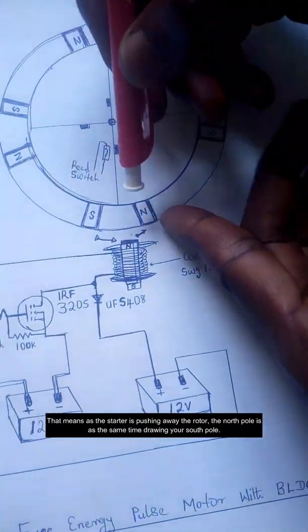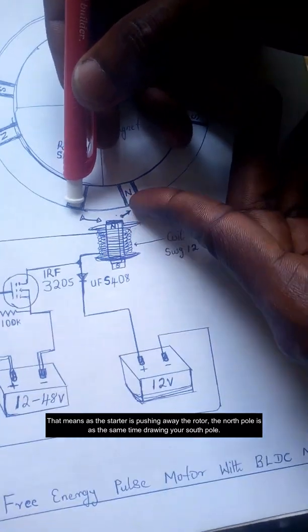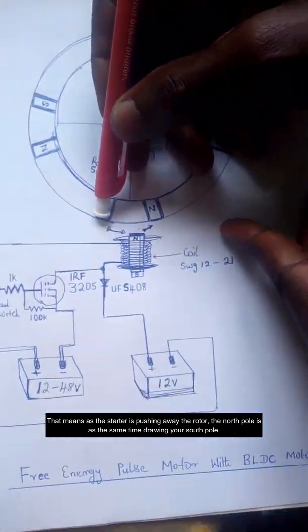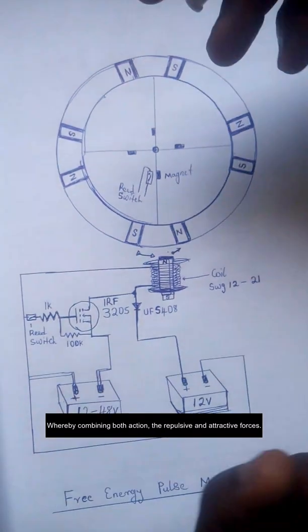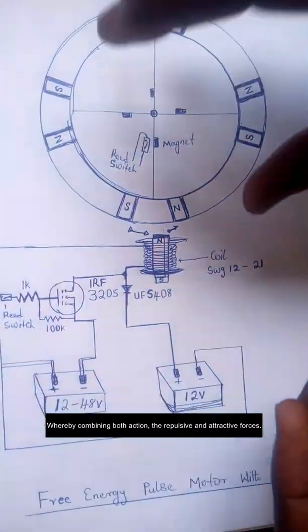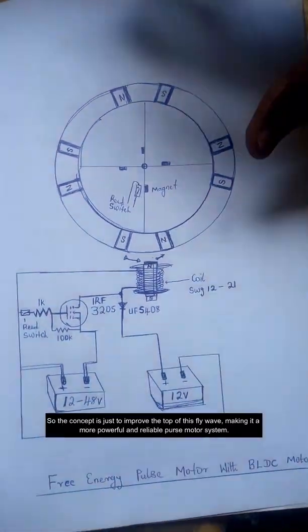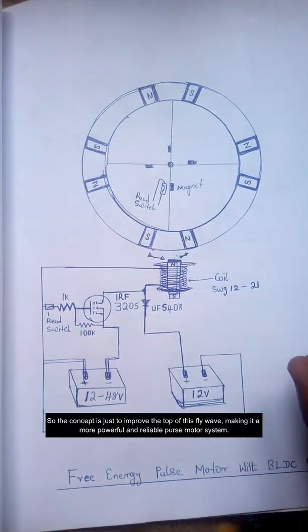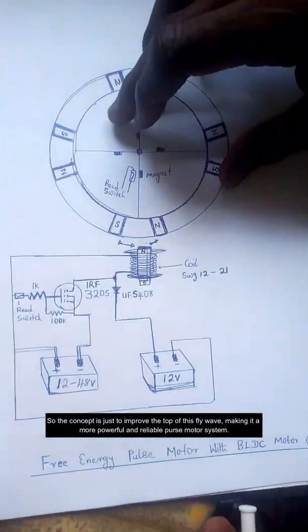Thereby combining both action, the repulsive and the attractive forces. So the concept is all about improving the torque of this flywheel, making it a more powerful and reliable pulse motor system.